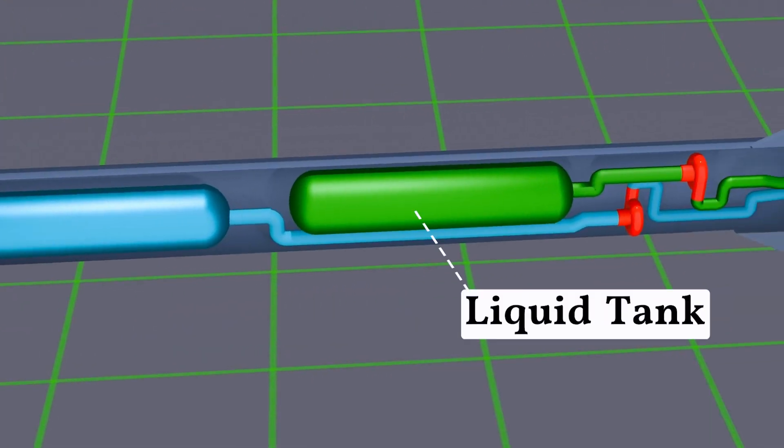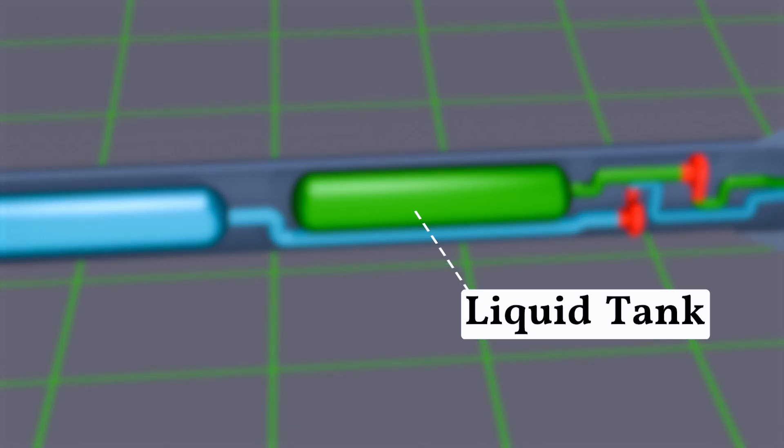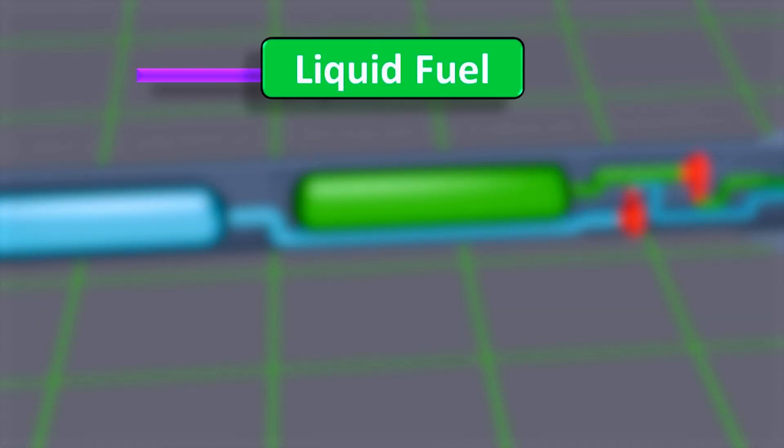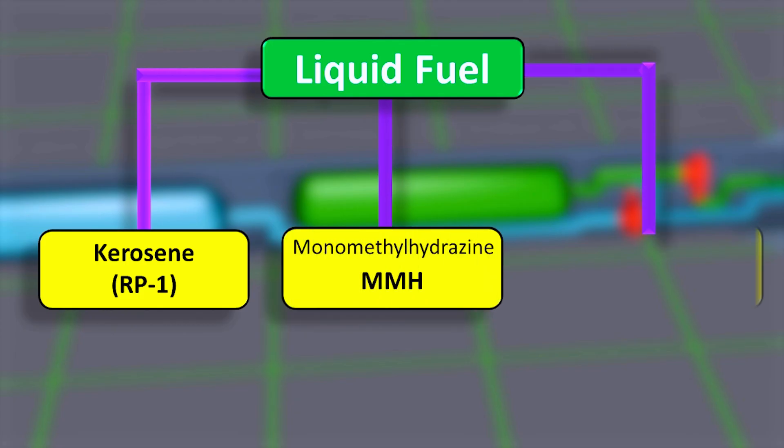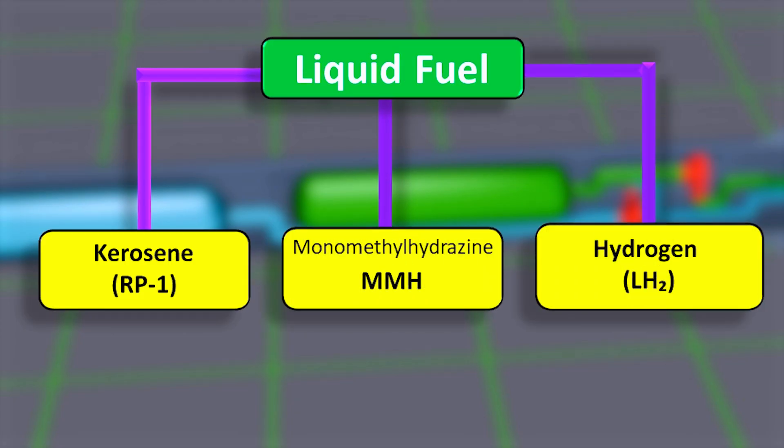Next, this is the liquid fuel tank. Depending on the type of missile, the liquid fuel can be different. It can be kerosene, RP1, monomethyl hydrazine, or liquid hydrogen, also known as LH2.